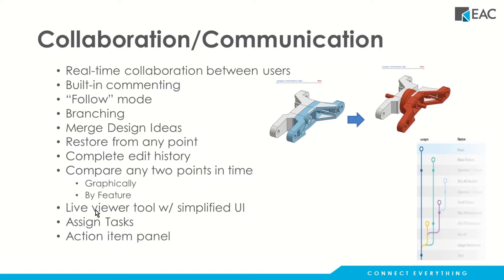There's a live viewing tool with a simplified UI. I can send a link to somebody, they click on it and they're in Onshape. They don't need any downloads and they don't use a license. We can also assign tasks because it's a data management system — we can assign who does what and when. People have an action item or to-do list, and after finishing those actions, we click on them and they are removed from the list.